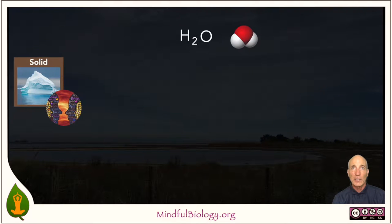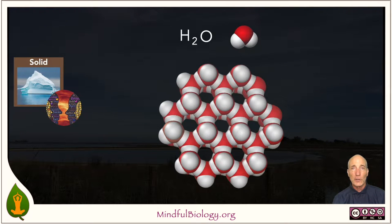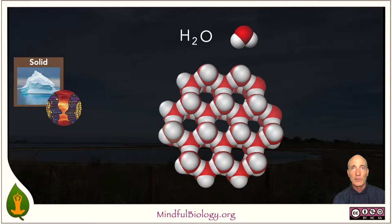If we look at a familiar chemical compound, H2O, or water, we know that it occurs in a solid form — we call that ice. The water molecules, when they're in the form of ice, are arranged in a very regular pattern, with fairly tight bonds one to the next, which makes for a stable, solid substance.